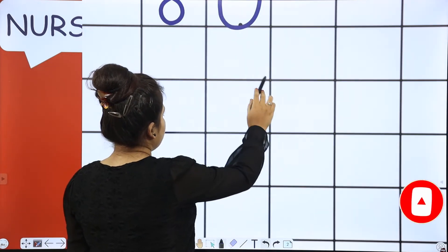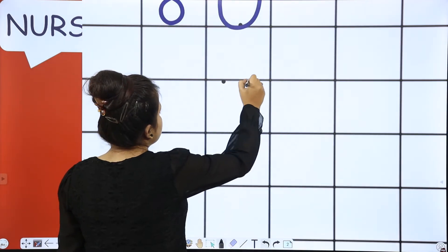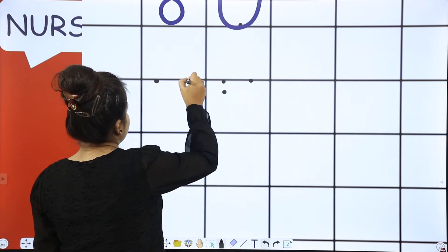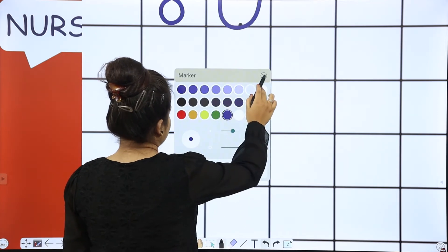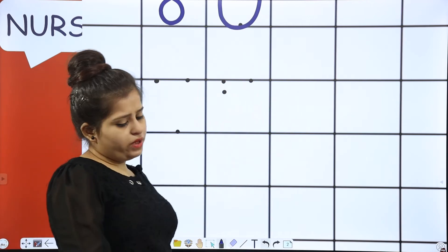Next number. Next number is 75. 75. Write it down.